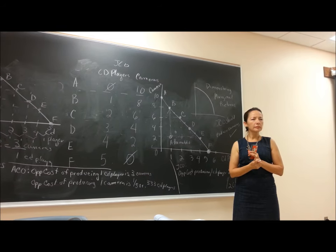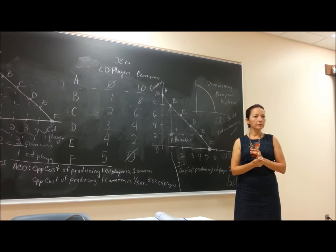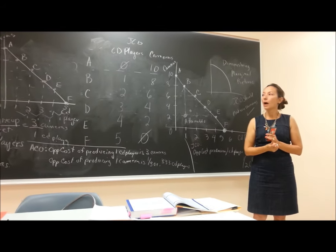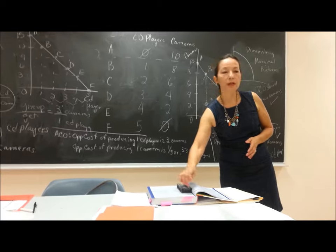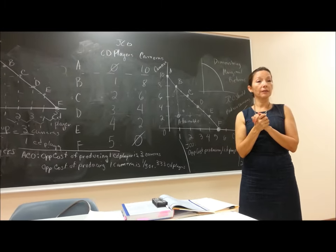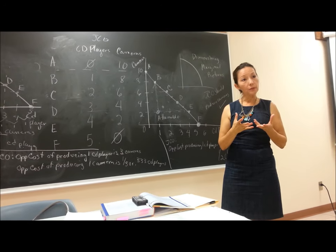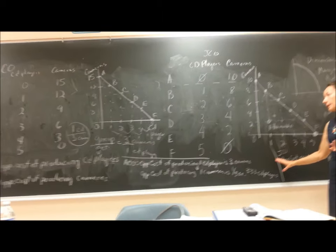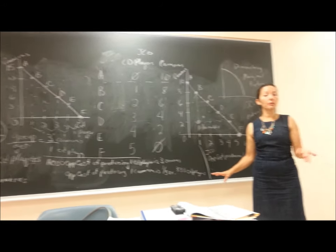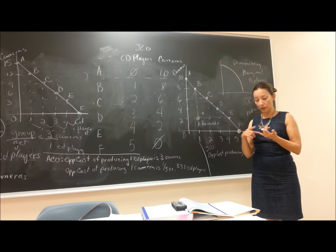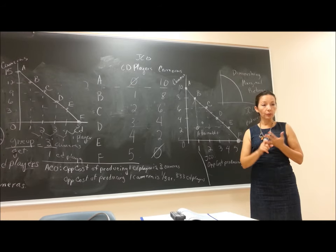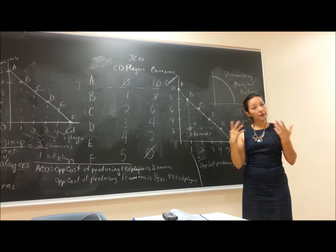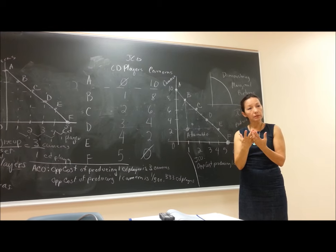Even though JCO might have a lower opportunity cost for cameras, ACO might produce them cheaper in dollar terms. Remember, opportunity cost is everything you have to give up — the cost of your labor, rent, the interest rate on your capital. It rolls everything in. So we're not talking about raw dollar amounts here; we're measuring the full cost of what's given up.